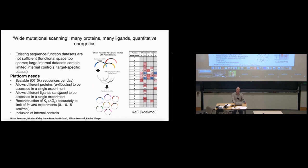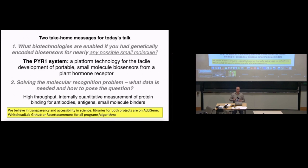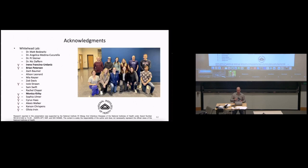I think we can get there and that's where I'm interested in pushing. So the two take homes for this portion: what I showed you is a system, a platform technology for development of small molecule biosensors sourced from a plant hormone. The second thing I want to leave you with is really solving that molecular recognition problem. If we want to solve that, or you want to think about this, what is the data needed? And how do you actually pose that question? I'll end here and take some time for questions.